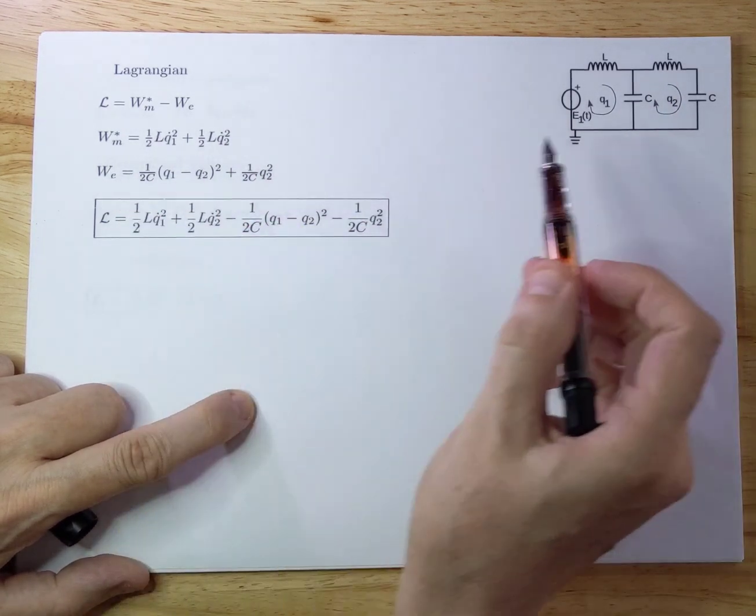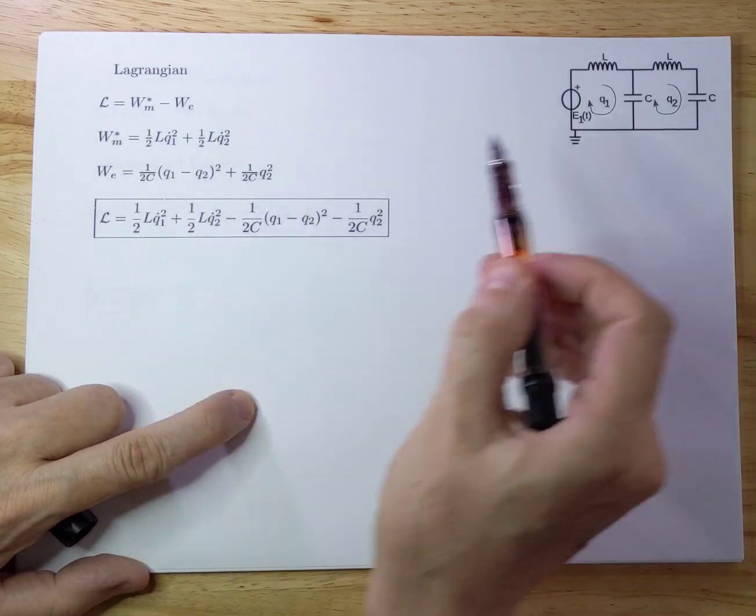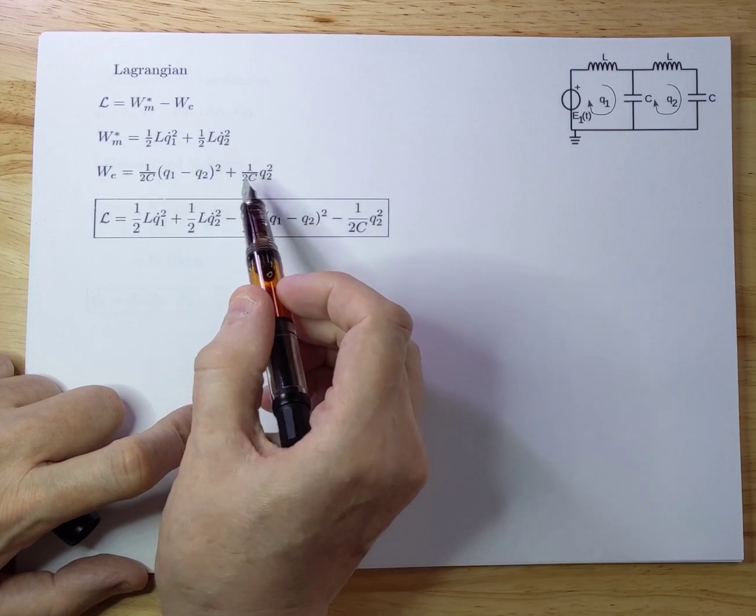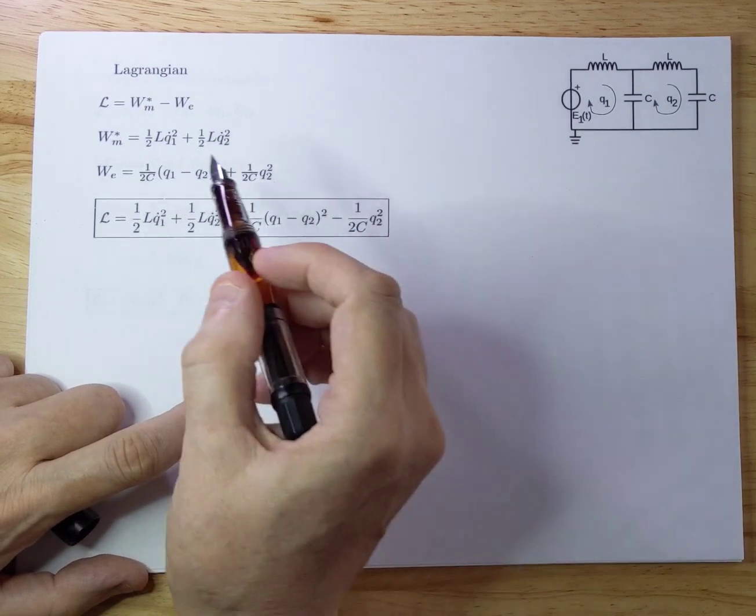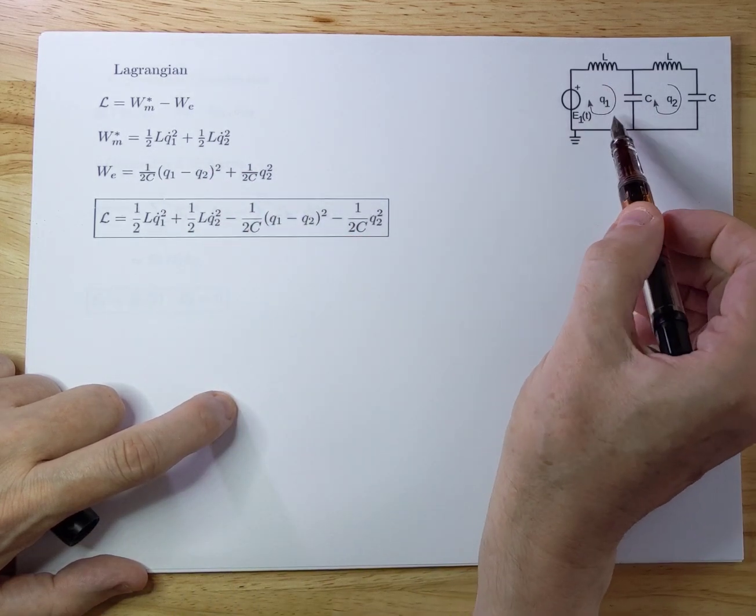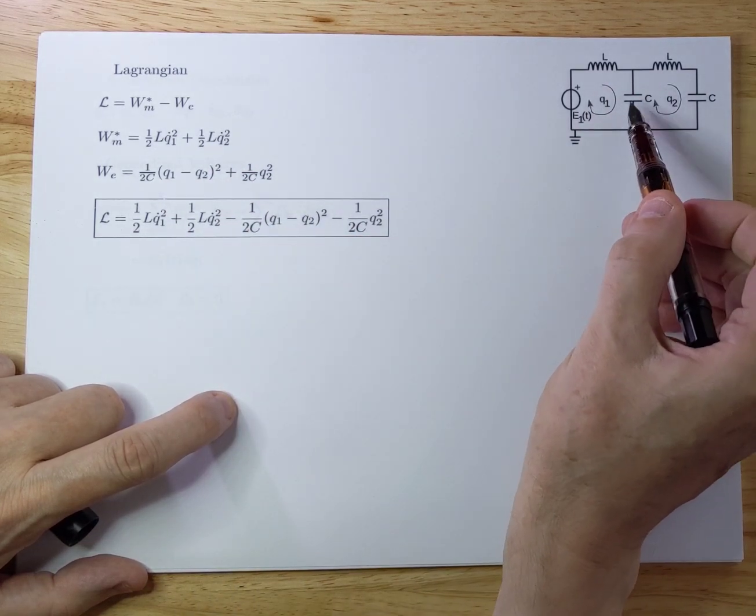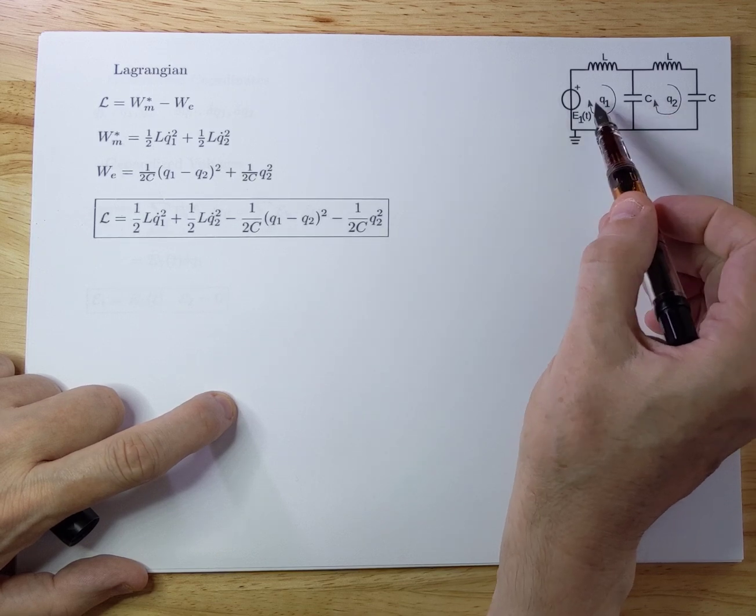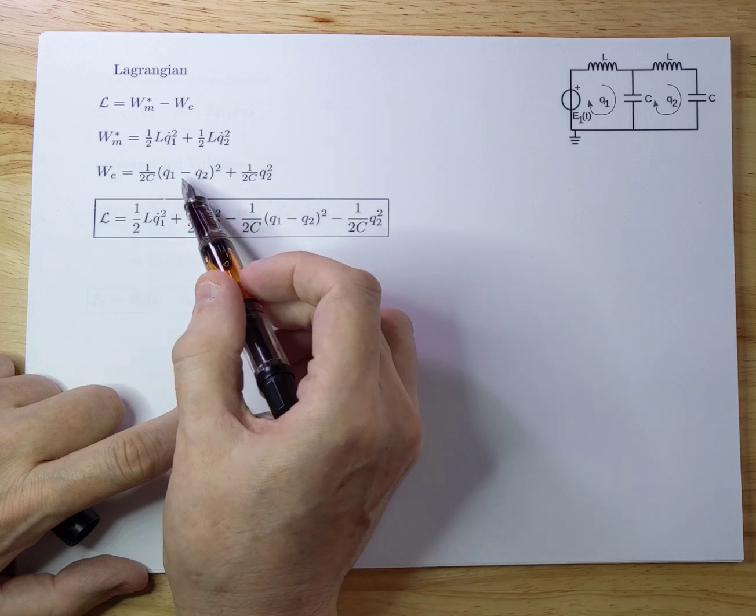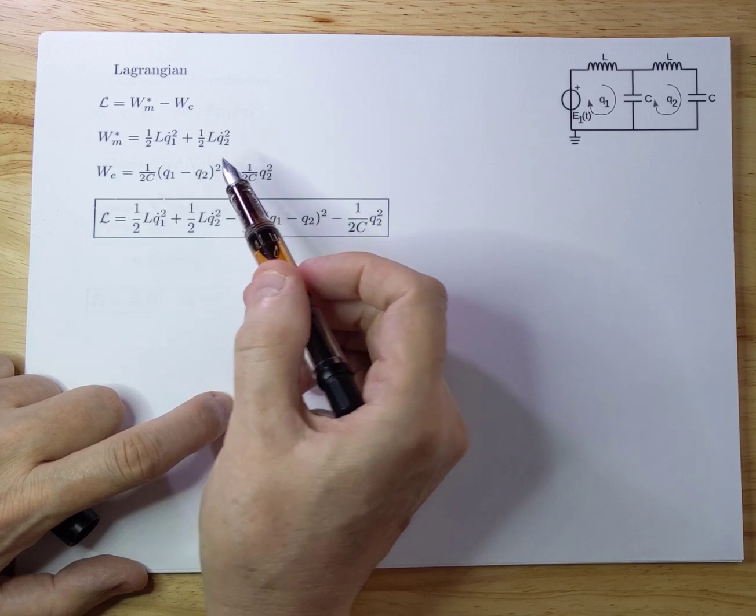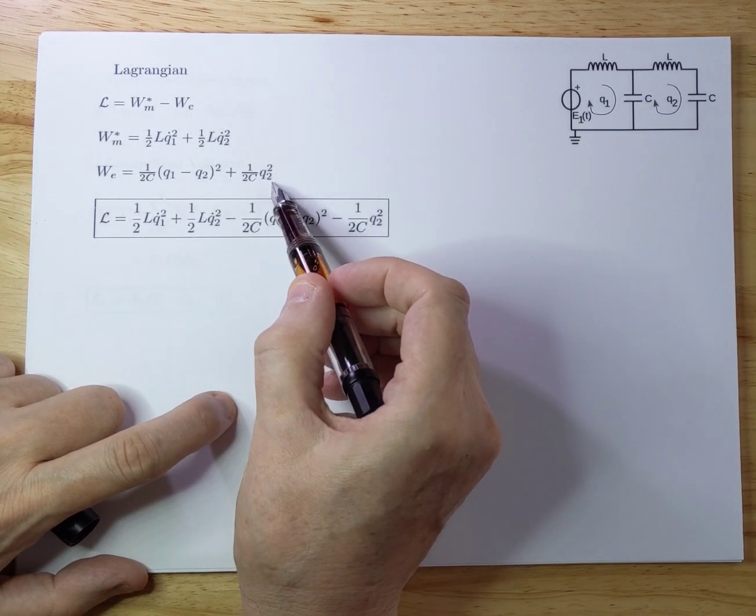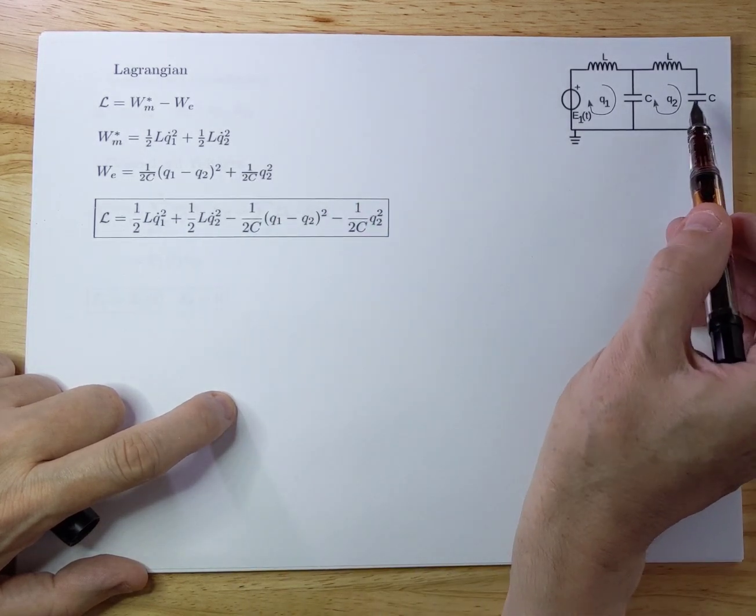Now we look at the capacitor, and we will see that if you look at the circuit here, the energy which you can compare to potential energy is equal to Q1 minus Q2 squared over 2C. You have Q1 minus Q2, because they go in different directions, as you can see here. Therefore, you have to subtract them. And you get 1 over 2C, Q1 minus Q2 squared. The energy in C is 1 over 2C, Q2 squared.